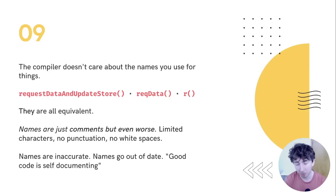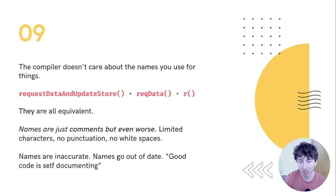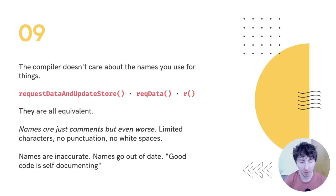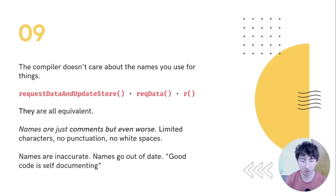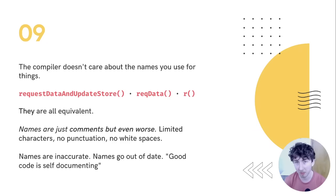Names have all the same problems that comments do — they're inaccurate by default because they're written in English, and they go out of date if someone changes the implementation but doesn't update the name. The ironic thing is the phrase 'good code is self-documenting,' which people use as a justification for not writing comments, often comes hand in hand with using a lot of abstraction. Given that names are basically equivalent to comments, it's ironic that people say this and then use a lot of names anyway.